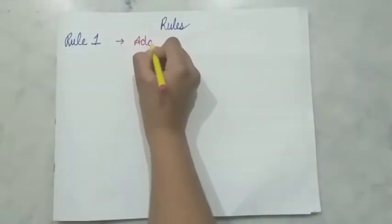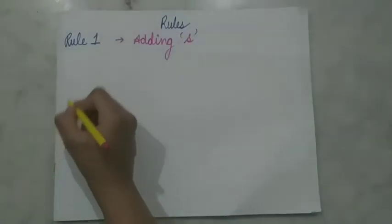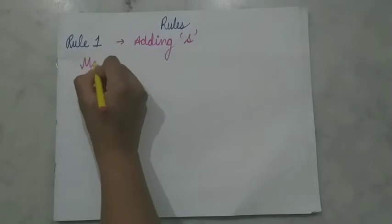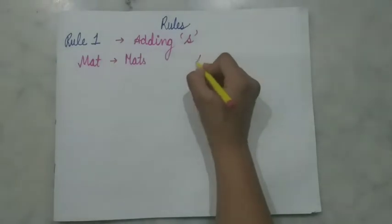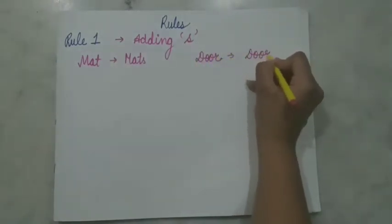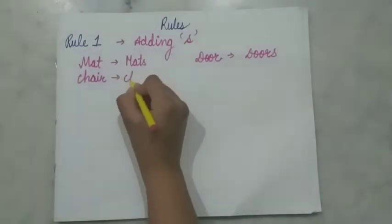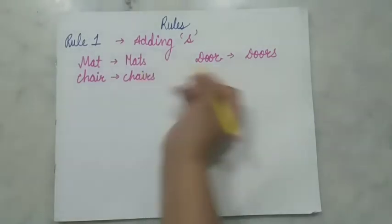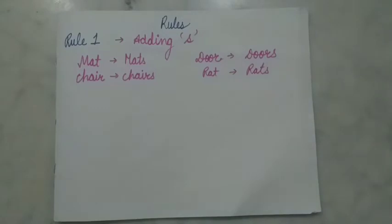Rule number one is adding 's'. So words like mat will become mats, door will become doors, chair will become chairs, and rat will become rats. This is the first rule where we add 's'.